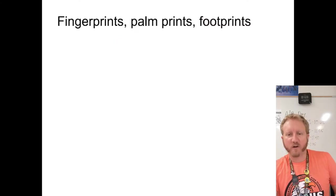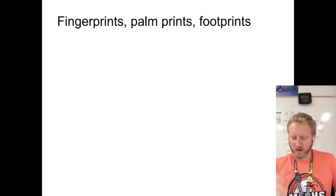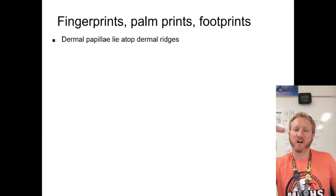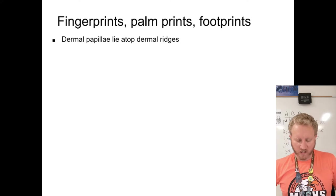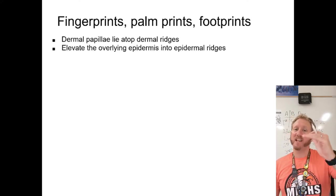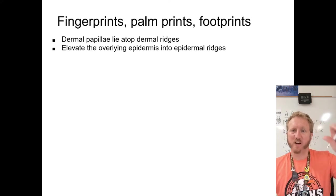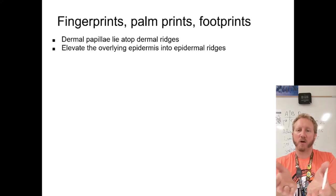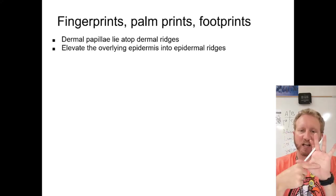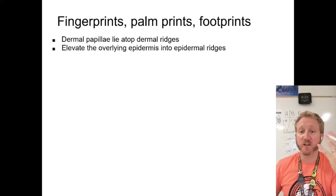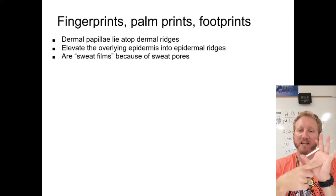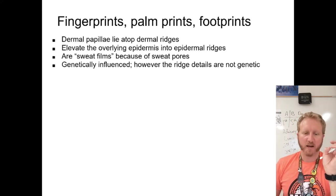We have fingerprints, palm prints, and footprints — little ridges on all of those. Dermal papillae sit on top of dermal ridges, which is why the skin micrograph looks wavy — those ridges push through and manifest on the surface of your skin, and that's where your fingerprints come from.